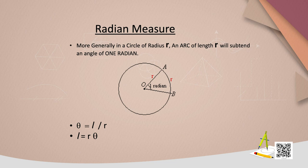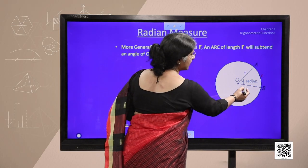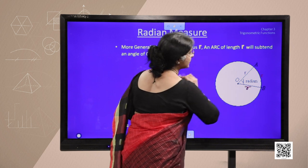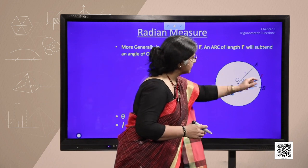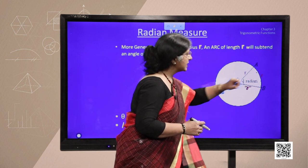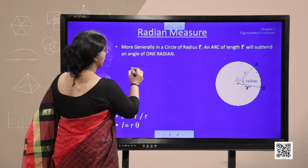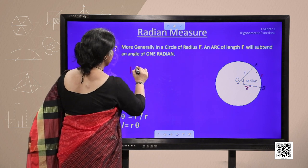Now, more about radian measure, more generally in a circle of radius r, if we are not taking 1, if we are taking the radius as r and arc is again subtending the same distance that is equal to radius, though we can say this is again 1 radian.